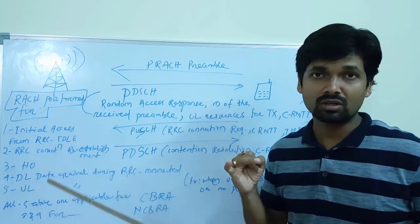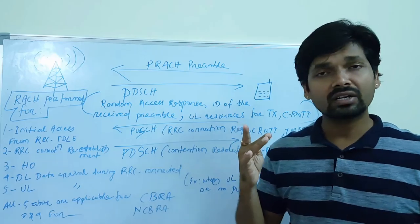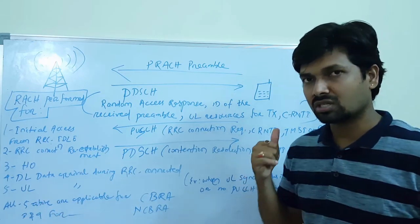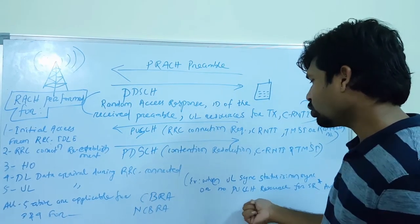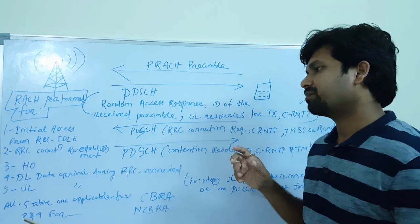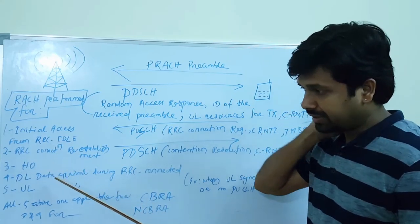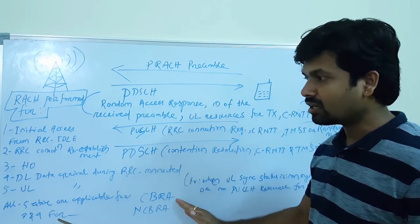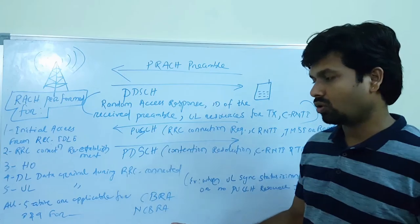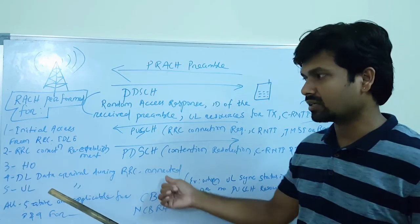The five reasons are: initial transmission from UE idle state; RRC connection re-establishment, if re-establishment is required; handover; downlink data arrival during RRC connected state; and uplink data arrival during RRC connected state if the UE is not synchronized or no PUCCH resource is available for service request. Those are the five reasons for random access.